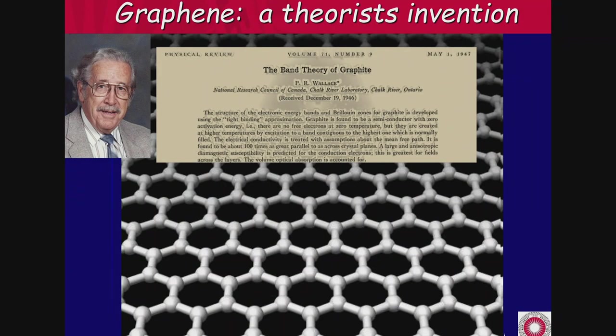This is one of the very rare cases — I don't know of any other one — where a material was invented before it was discovered. Shortly after World War II, Russell Wallace, working for the Atomic Energy Commission in Canada, was a young postdoc asked to calculate the band structure of graphite. After the atomic bomb, people were trying to use atomic energy for peaceful purposes in reactors, and graphite was a good candidate moderator. He worked and worked and failed — he was not able to do this.